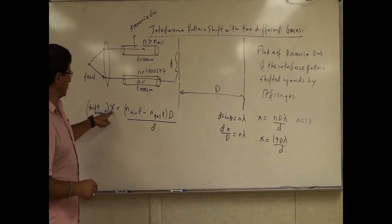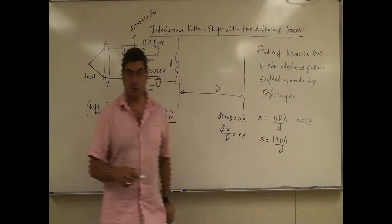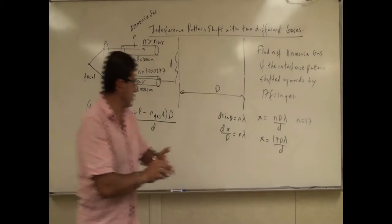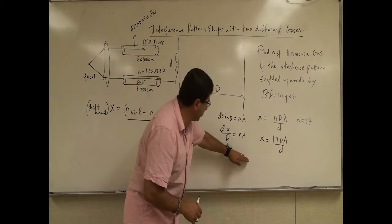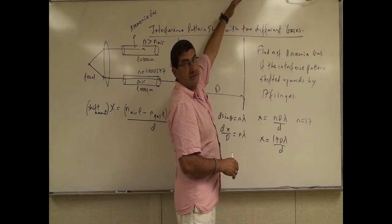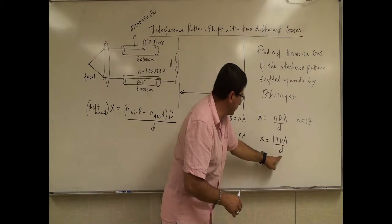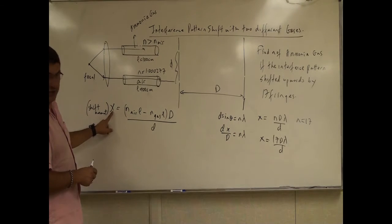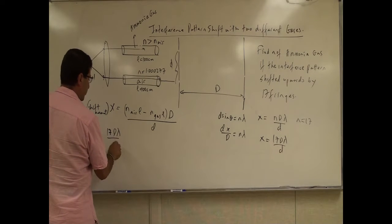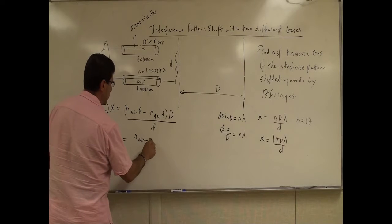So that means the X here, the shift amount, is equal to that one. So it's equal to the 17th fringe. In other words, the 17th bright fringe here is coming from the bottom and is replacing the central fringe. And the central fringe is replacing the 17th fringe over there. So that means X equals 17 D lambda over big D is equal to this X, which is equal to the shift amount. So we say here 17 D lambda over big D is equal to N air minus N gas.